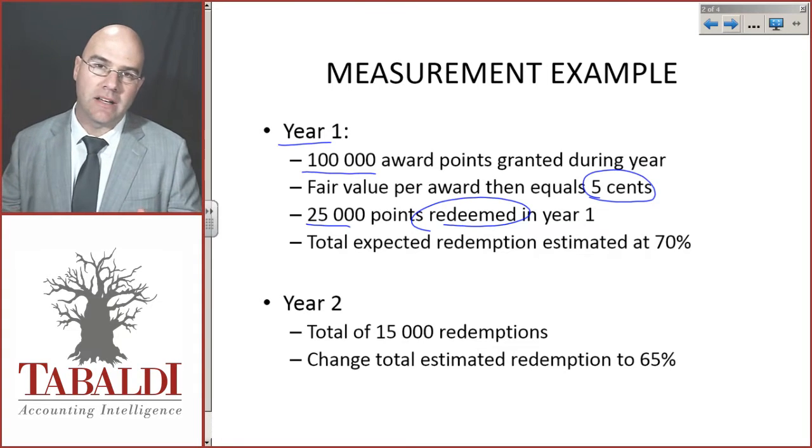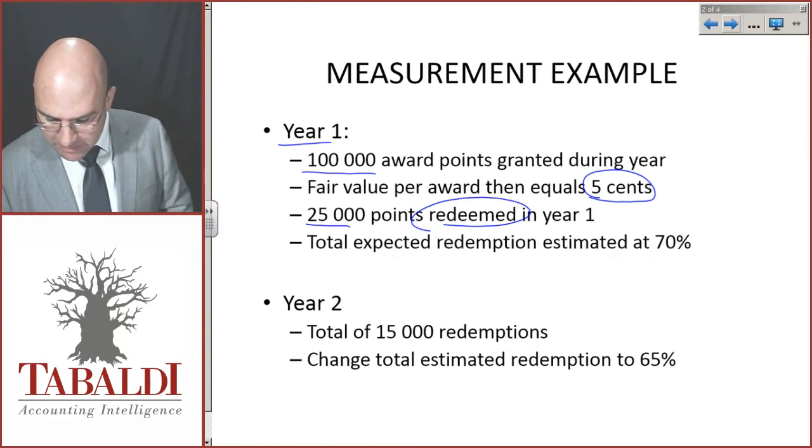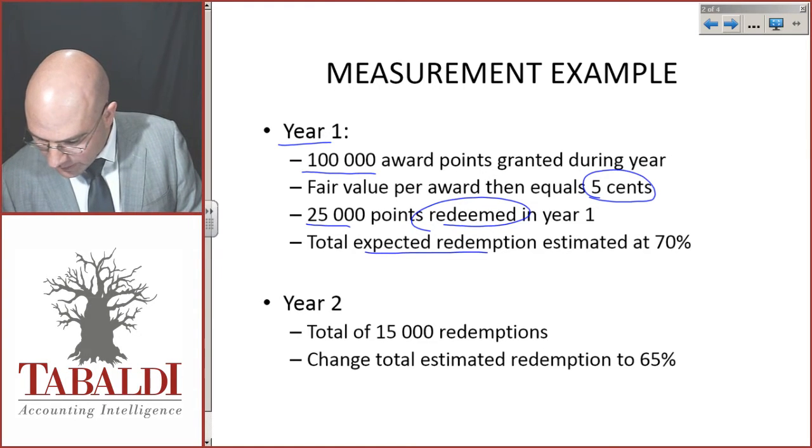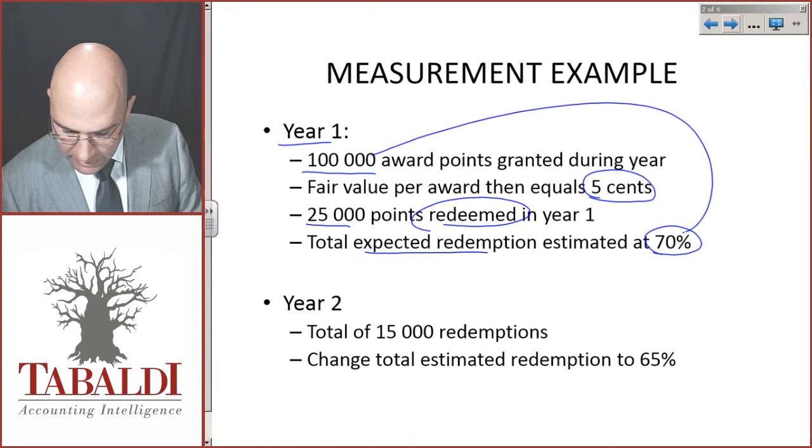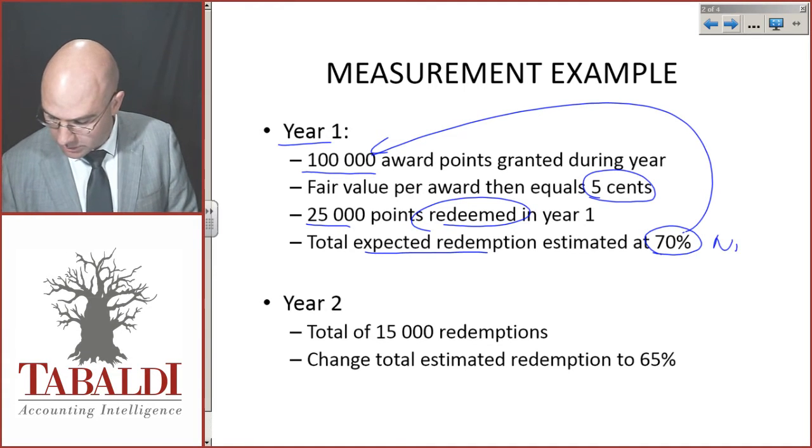In year 1, 25,000 points were redeemed, so people came and used 25,000 of those points to purchase tickets. Total expected redemption rate is 70% of the 100,000. That is very important to note.